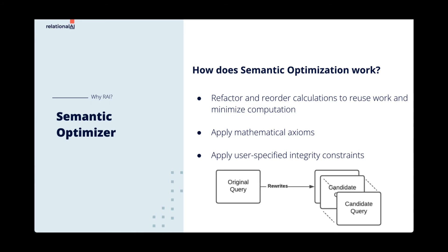The rewritten candidate queries are equivalent to the original and produce the same results. But how do we know which candidate runs fastest? Runtime estimation is based on what we know about the data distribution in the graph, which is then used for cardinality estimation.